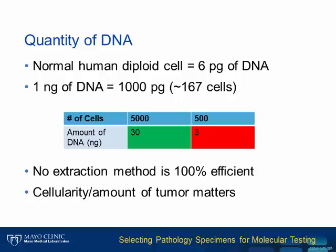The tissue amounts and cellularity requirements correlate with the amount of DNA needed for the test. It is useful to keep in mind that normal human diploid cells have approximately 6 picograms of DNA. Often, a test protocol states how much DNA is needed in nanograms, and not how much tissue is needed in centimeters or millimeters, or how many cells. A little conversion is helpful: one nanogram equals 1,000 picograms, and at 6 picograms per cell, that's approximately 167 cells. So if you have about 5,000 cells, that is approximately 30 nanograms. In comparison, with 500 cells, you really only have about 3 nanograms of DNA.